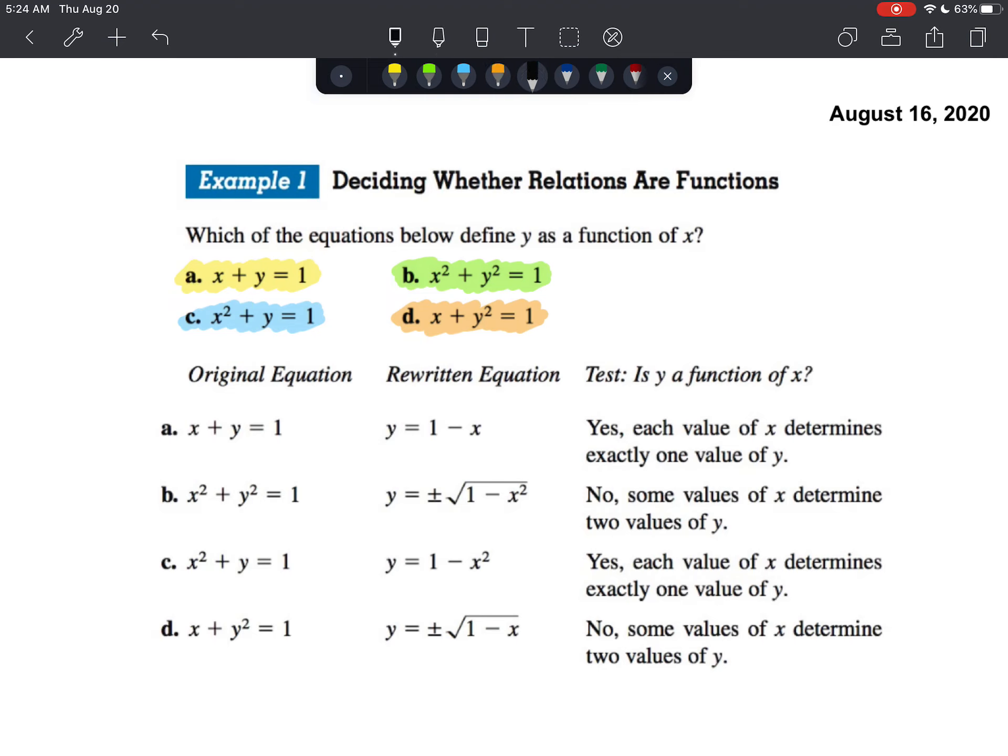Now, this book will explain it in another way. They rewrite the equation so that you can test values. You can see, okay, if I put a value in for x, do I get two different values for y? And you can see that that's the case in b and d.